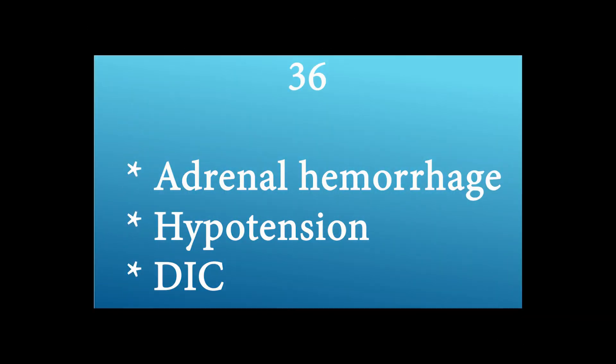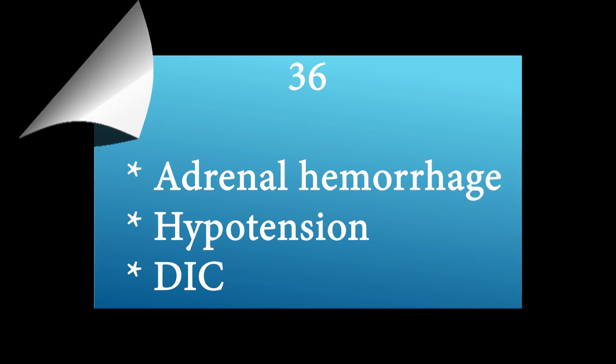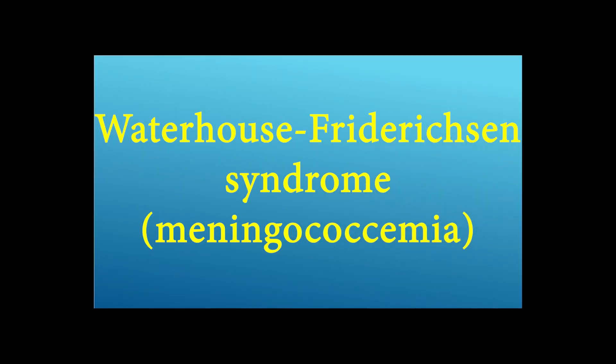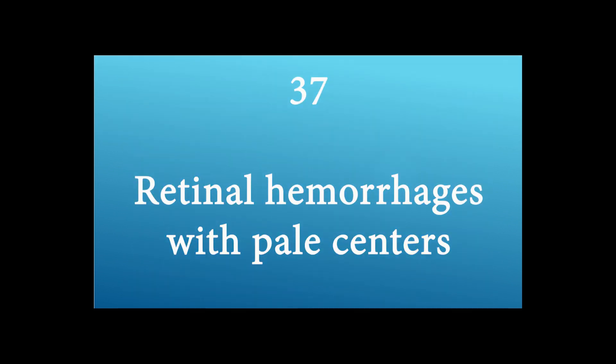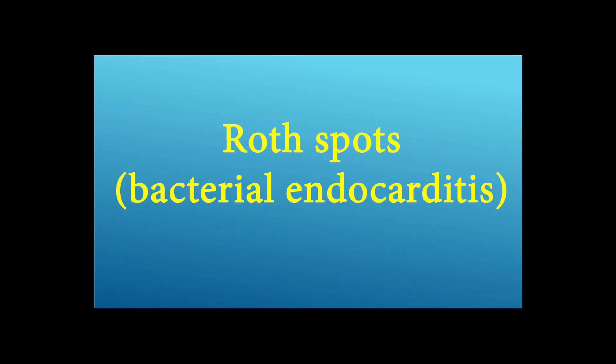Adrenal hemorrhage, hypotension, and DIC — what is the diagnosis? Waterhouse-Friderichsen syndrome, meningococcemia. Retinal hemorrhages with pale centers are called Roth spots — seen in bacterial endocarditis.